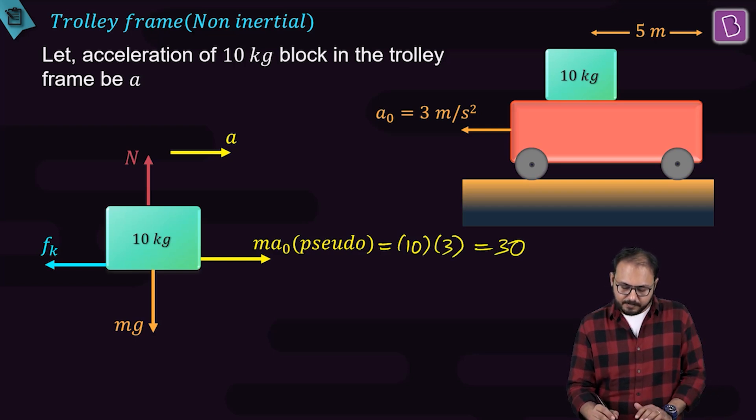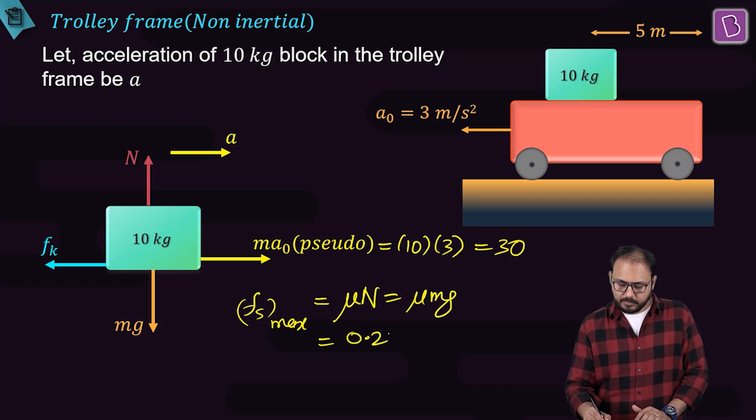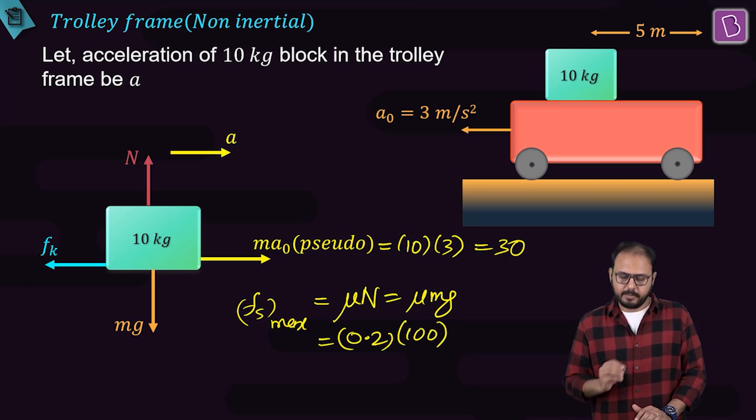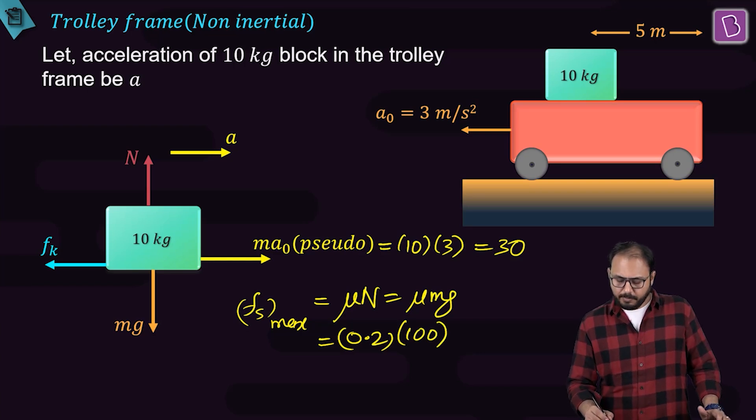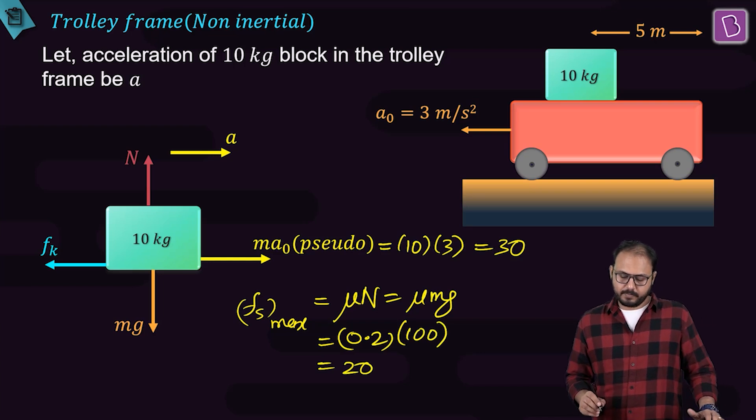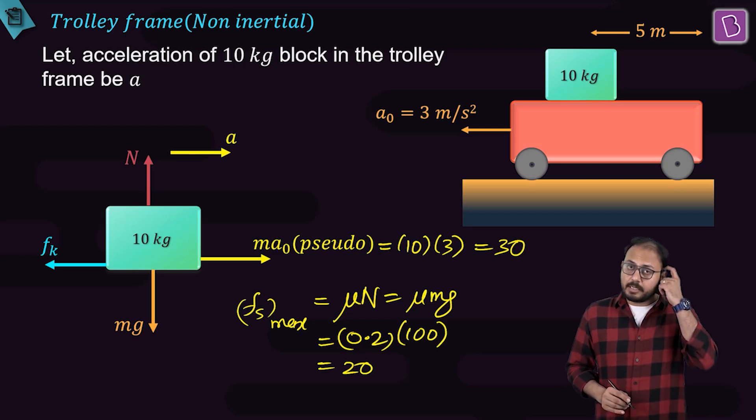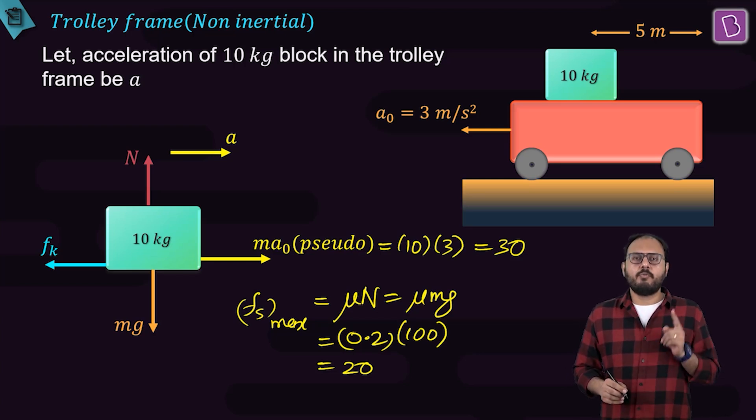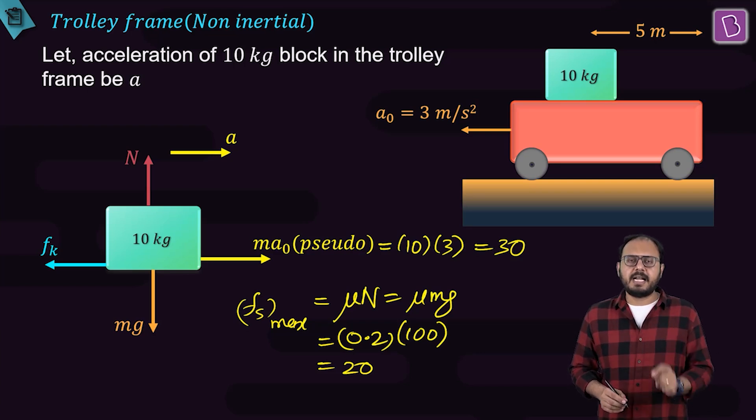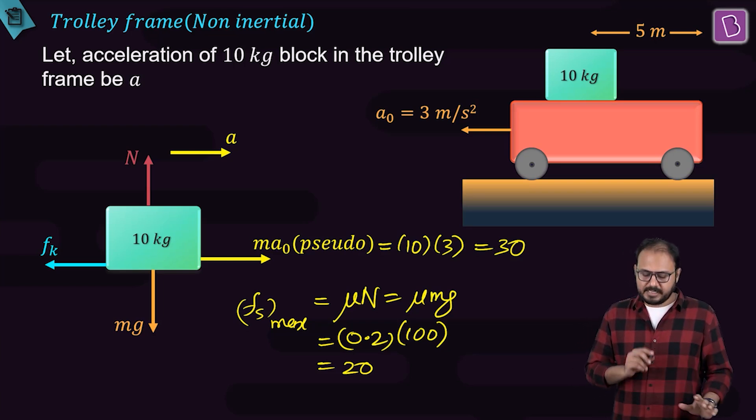Friction coefficient is actually given to you as 0.2. So first, can you find out the FSmax? FSmax is equal to mu n. Mu n here will become equal to mu mg, 0.2 multiplied by mg. mg is 100, so 100 into 0.2 is equal to 20. Is pseudoforce value more than the maximum friction value? Yes. Do you agree the sliding will take place? Yes. What will be the nature of friction now? Kinetic. And kinetic is a fixed value equal to mu k n.